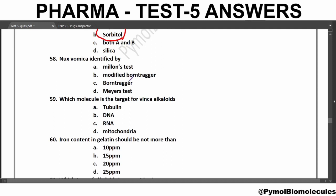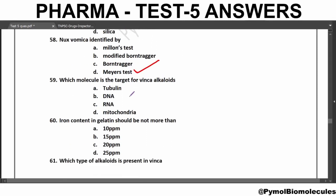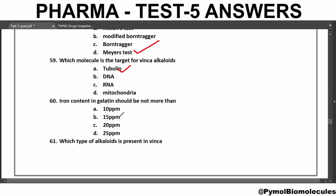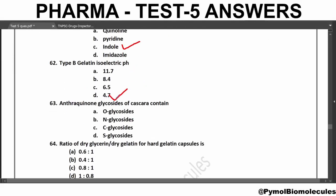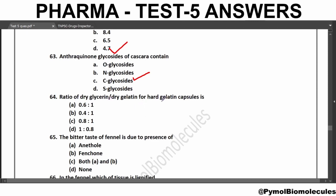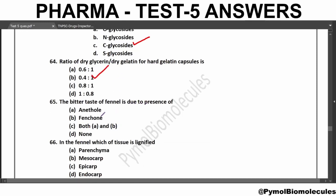Nux vomica is identified by Mayer's test, which is a test for alkaloids. The molecule that is the target for vinca alkaloids is tubulin. Iron content in gelatin should not be more than 15 ppm. The type of alkaloid present in Vinca is Indole alkaloids. For Type B gelatin, the isoelectric pH is 4.7. The anthraquinone glycosides of Cascara are C-glycosides. The ratio of dry glycerine to dry gelatin for hard gelatin capsules is 0.4:1. The bitter taste of fennel is due to the presence of fennel cone.